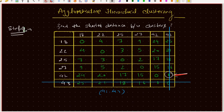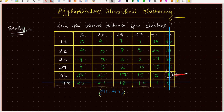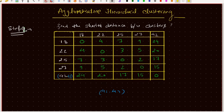So we merge clusters 42 and 43 together. After merging, the corresponding row and column for the individual points are removed from the proximity matrix, and they are replaced by the new merged cluster.